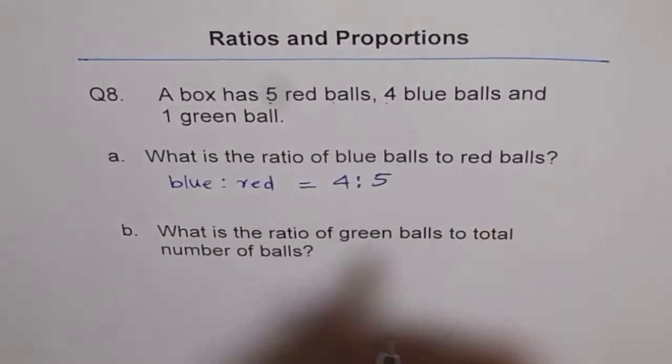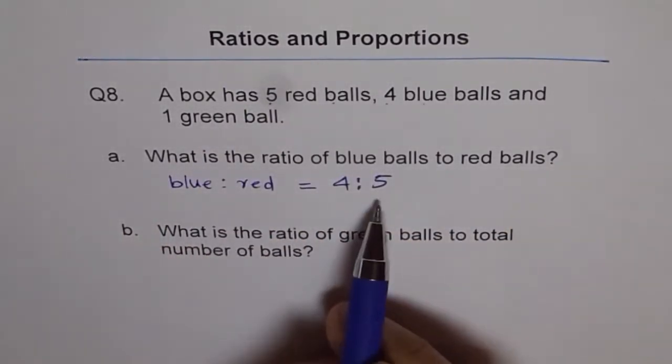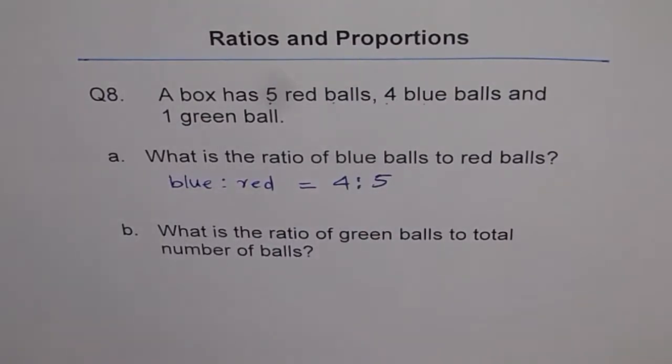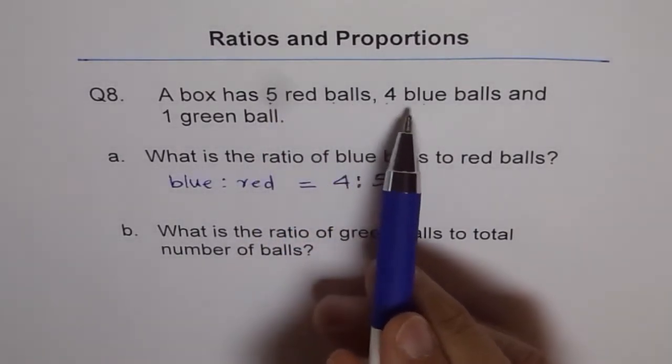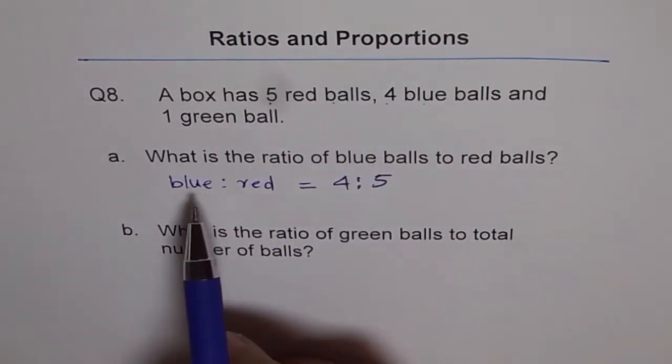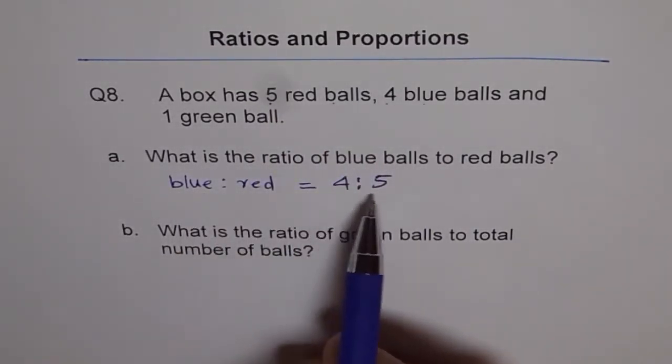Do you see that? So always write in a proper order. If you mix the order, then it's a wrong answer. So we have 4 blue balls and 5 red balls. So the ratio is 4 is to 5 for blue is to red. That is your answer.